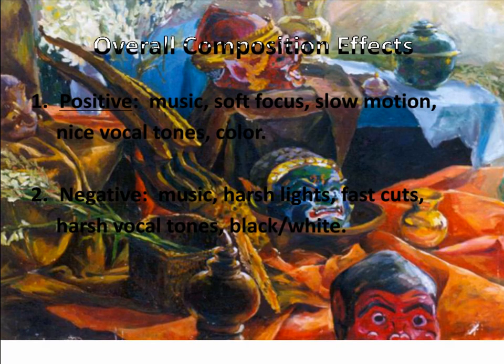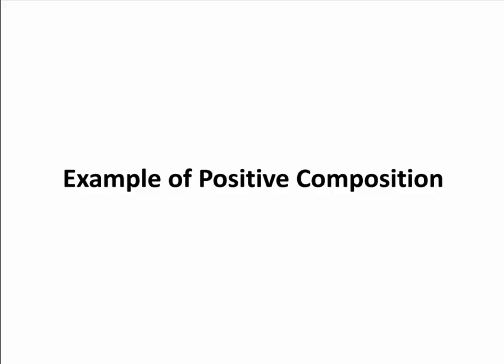In terms of how we affect the meaning of visual images — what I mean by semantics — there are many components from costuming to the use of recognizable, simplistic characters. These are all techniques we can use in whatever persuasive context we find ourselves in, always keeping the audience in mind. For a positive video, you have positive music, a soft focus, slow motion, warm vocal tones, and nice colors. Or you can do the opposite — negative imagery with harsh lights, fast edits, black and white, and harsh vocals. Let's watch the 1984 re-election ad for Ronald Reagan.